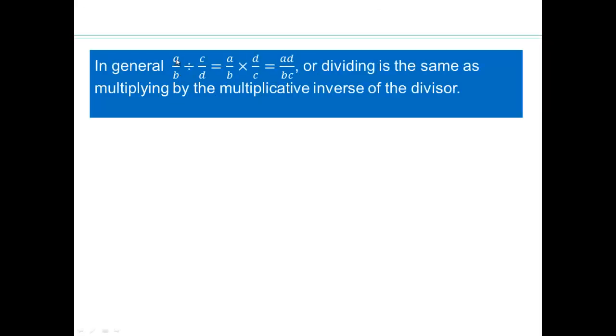So in general, then, if you have a over b divided by c over d, then it's the same as a over b times the reciprocal d over c. So if you have fraction over another fraction, which is referred to as a complex fraction, then you just take the numerator fraction times the bottom fraction inverted, and then multiply it out.